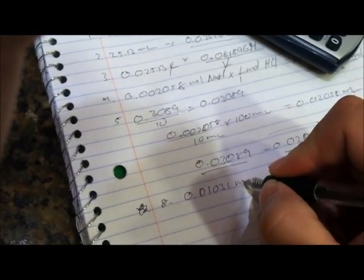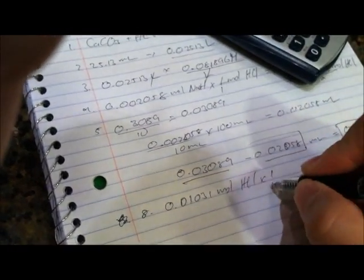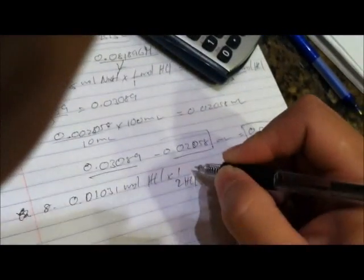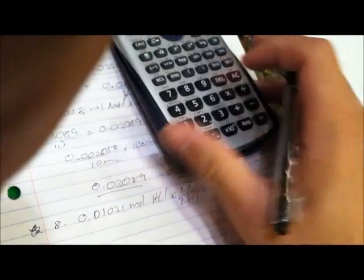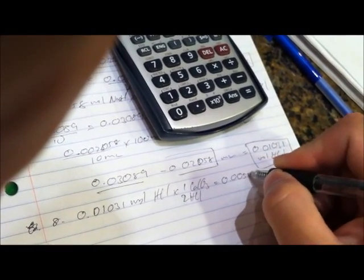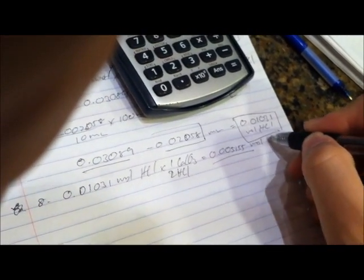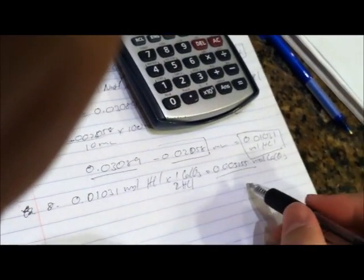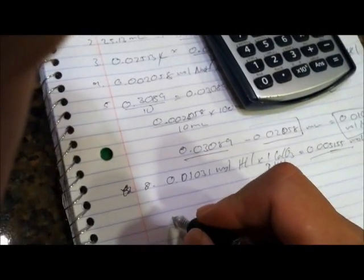0.01031 moles of HCl times, let's do mole to mole, two moles of HCl to one mole of calcium carbonate. And that should give us 0.005155 moles of calcium carbonate. Those numbers look really good.